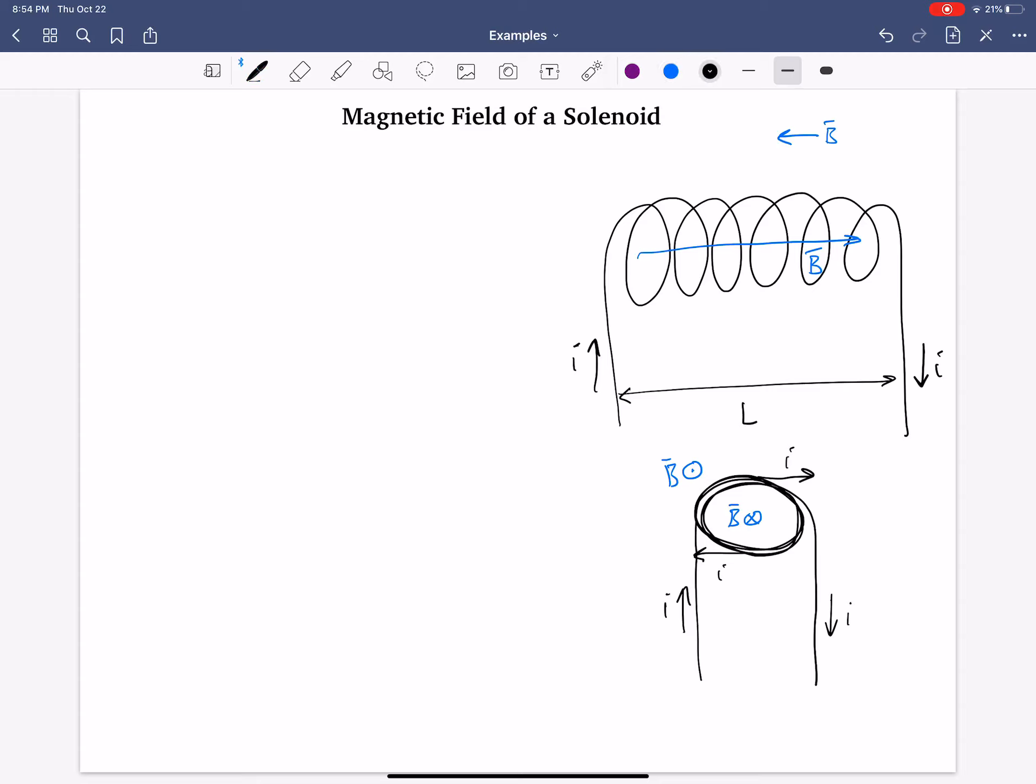We need to use Ampere's law to find the magnitude of the magnetic field inside and outside, okay? So a closed integral of B dot dS is equal to mu naught times I enclosed, right? The current enclosed by some Amperian loop that we are free to create.